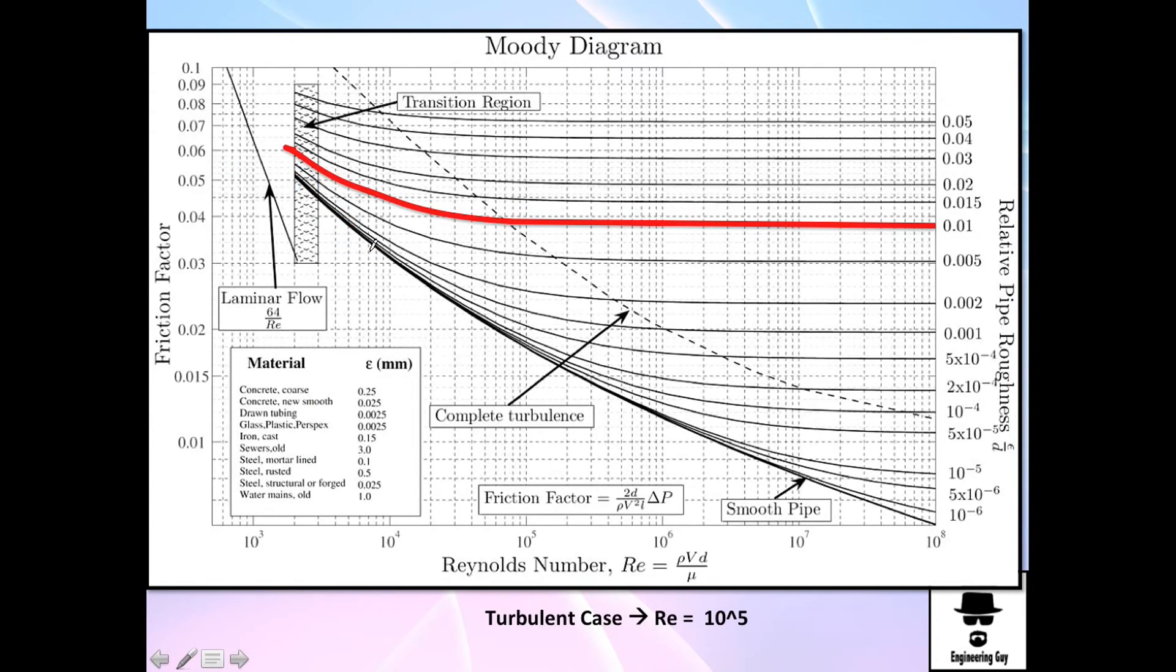And finally, but not least, the turbulent case in which Reynolds number equals 10 to the 5 is here. So we have 10 to the 5 Reynolds here. We go up until we crash here. And then we do our vertical line to the left. And something around, actually we have it here, a little bit less than 0.048. So I choose it to be 0.039.